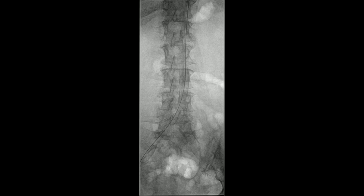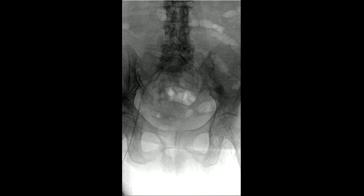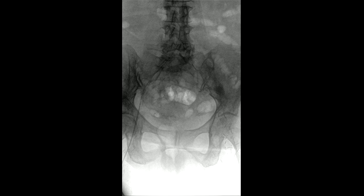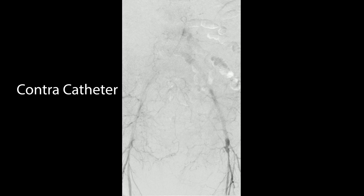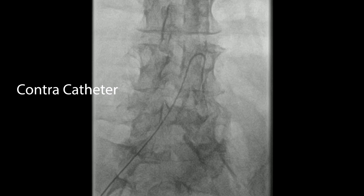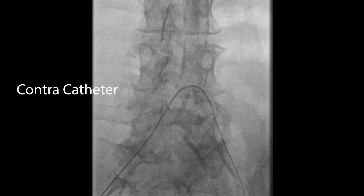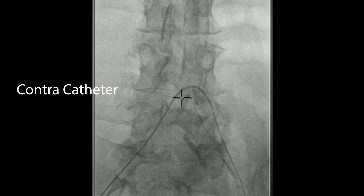We'll then introduce a flush catheter, as you do in the aortogram. In this case we'll be using a contracatheter. These flush catheters have multiple holes in the end that allow you to spray dye across the entire flow field, so you get a beautiful picture like that.